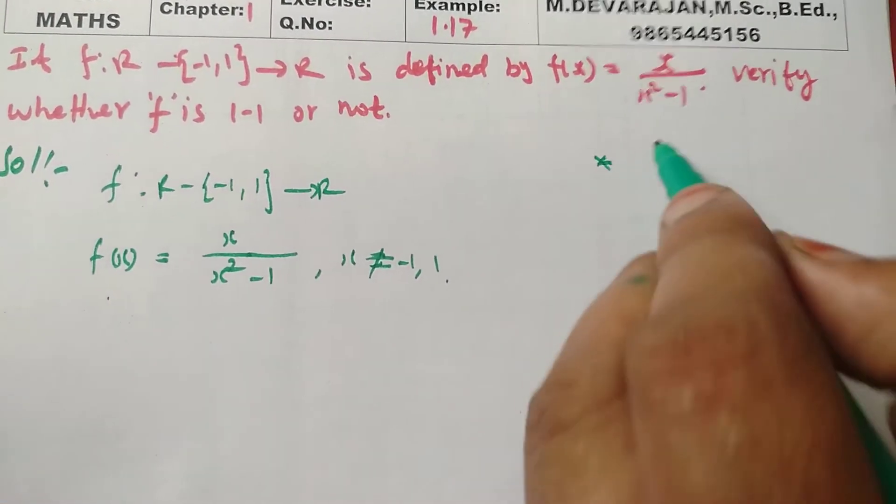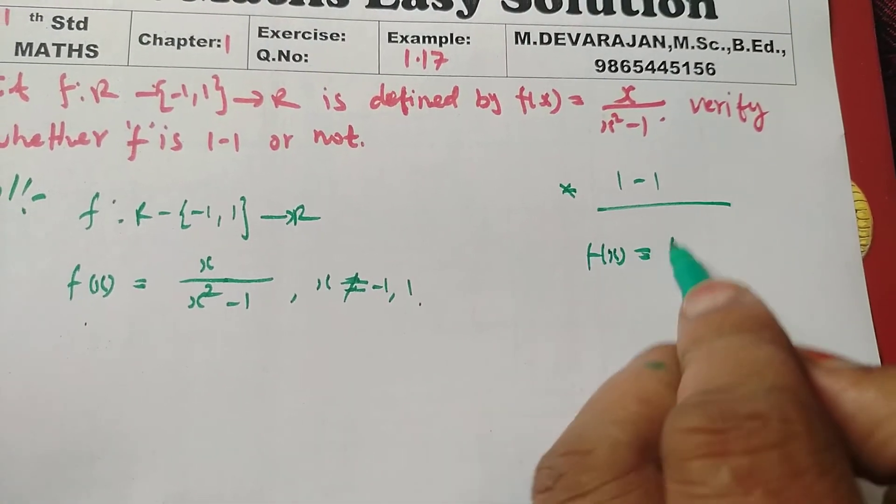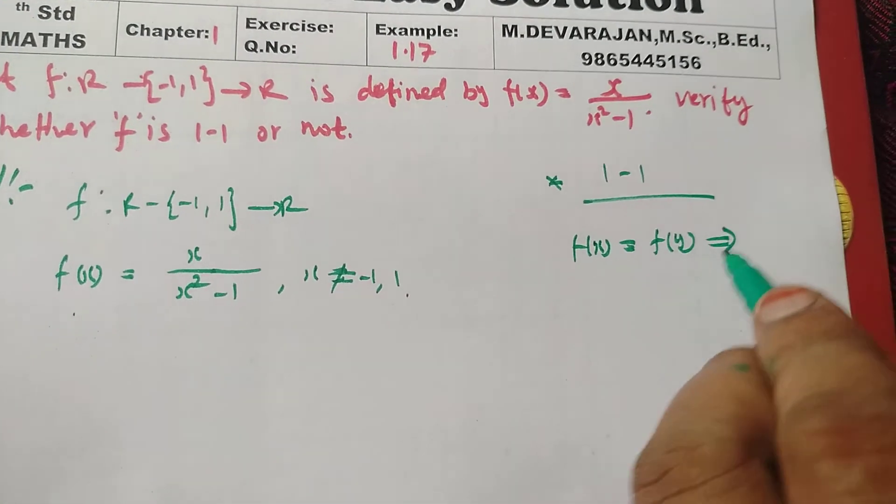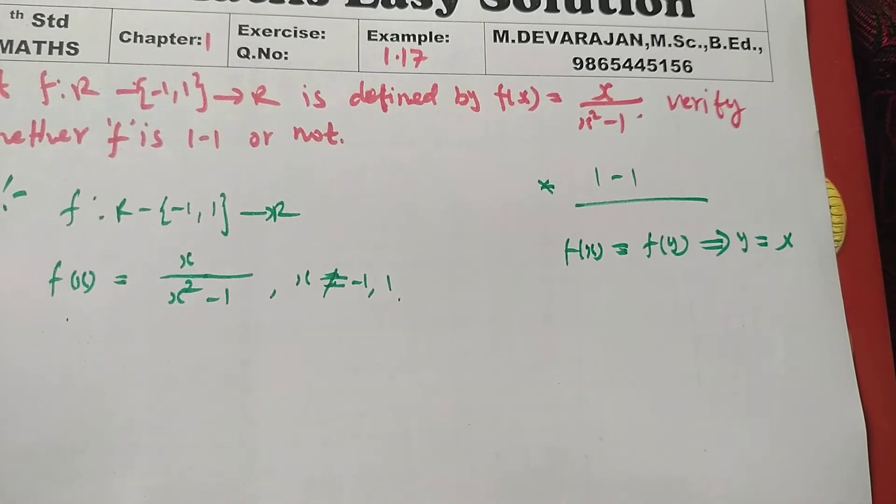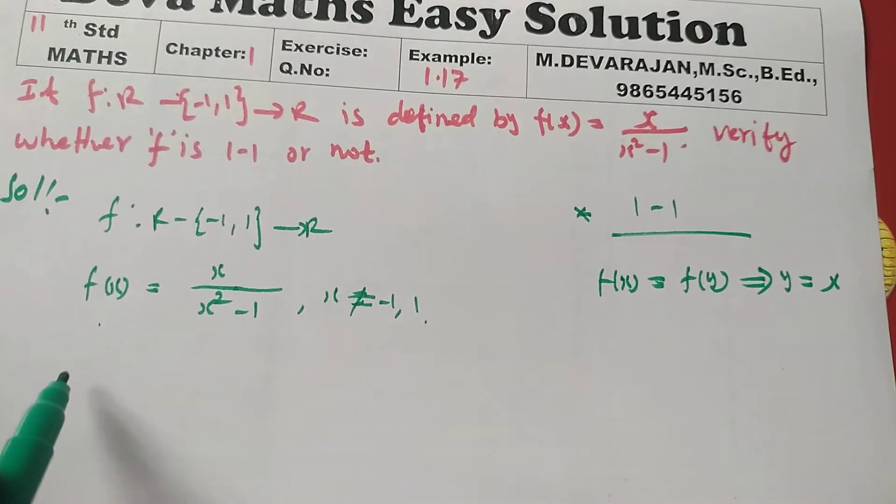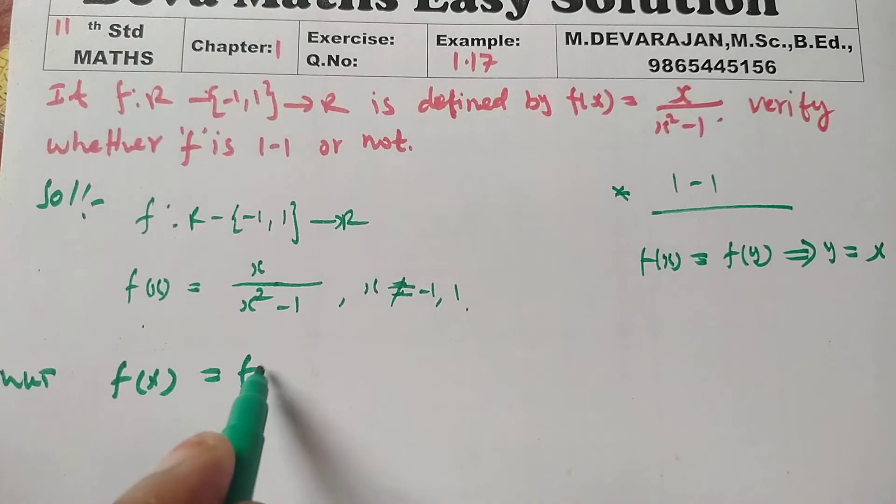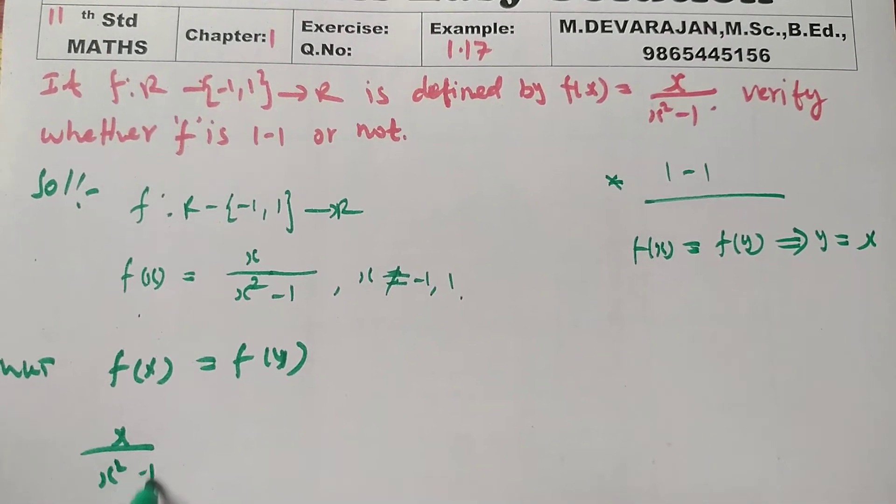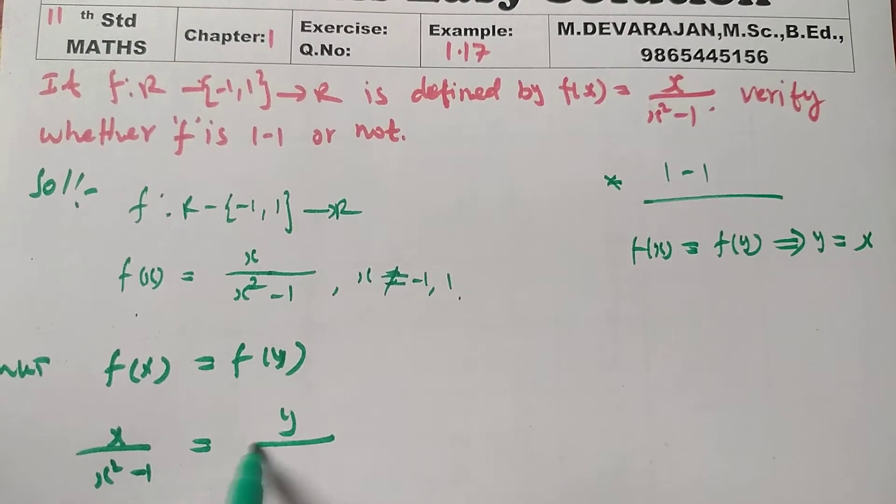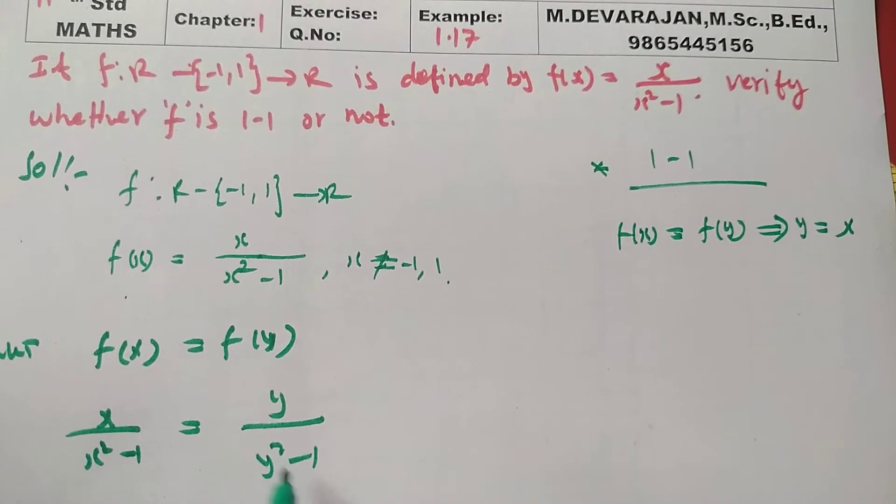To understand 1-1 condition: f(x) = f(y) implies x = y. First apply this condition. You know that f(x) = f(y), so x/(x² - 1) = y/(y² - 1).